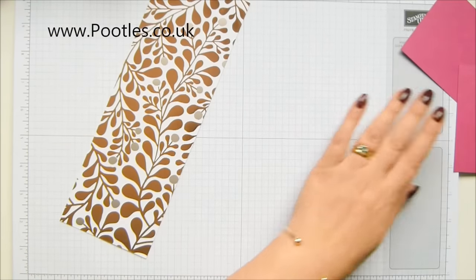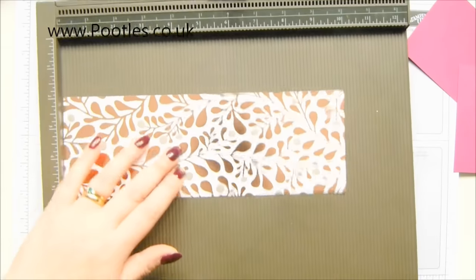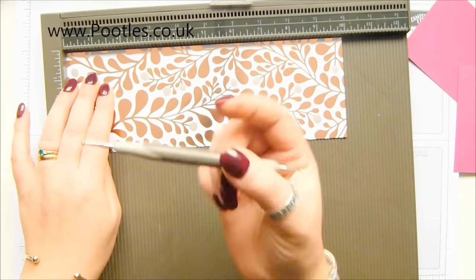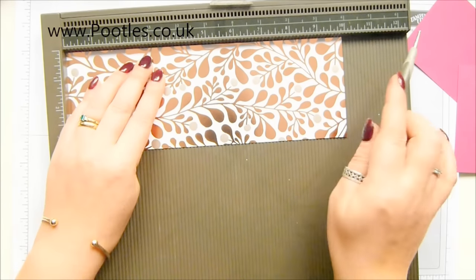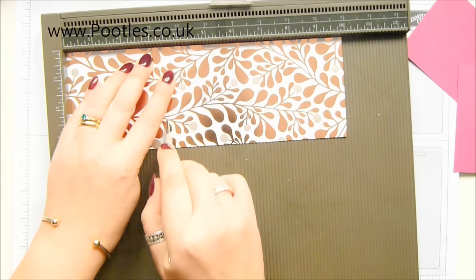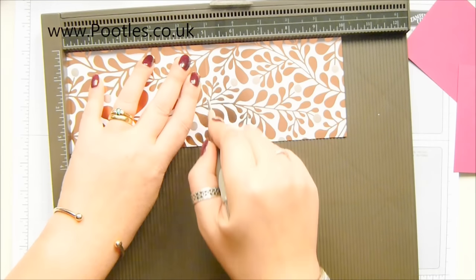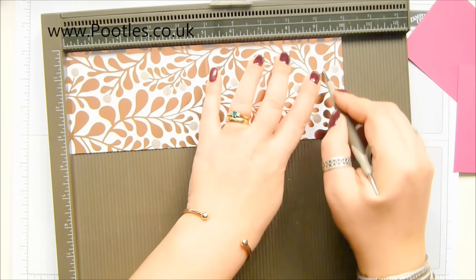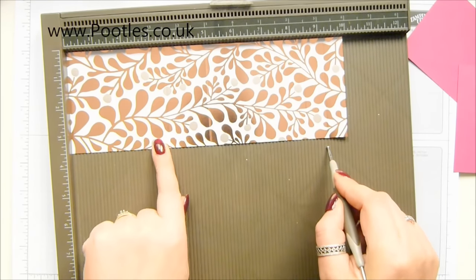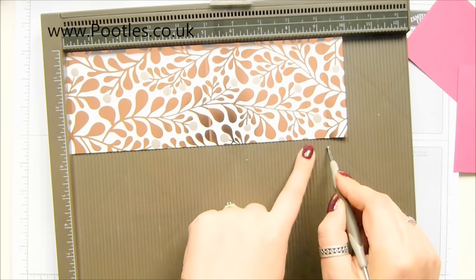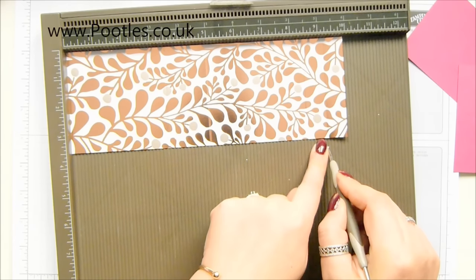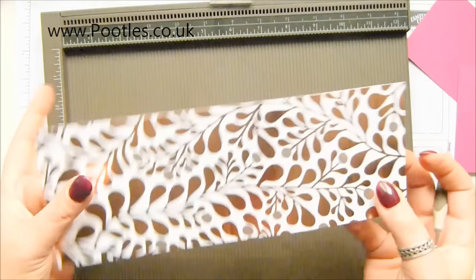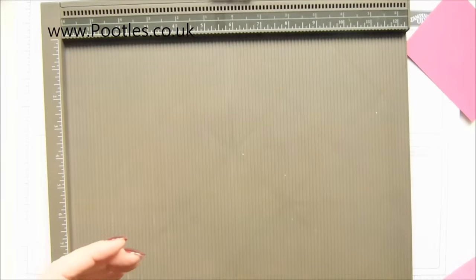We'll do the paper first and score it. We're only scoring alongside the three and a half inch side at five, eight and a half, and nine and a quarter inches, which in metric is nine, twelve and a half, twenty-one and a half, and twenty-three and a half centimeters.